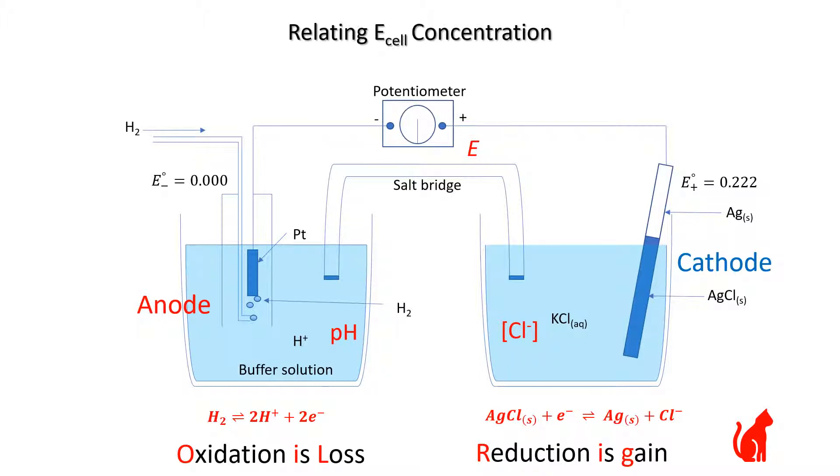So from an analytical chemist's point of view, what we're really interested in is the reading on the potentiometer, the potential difference, the concentration of chloride in the right half cell, and the pH in the left half cell, which is the negative log of the hydrogen ion concentration.